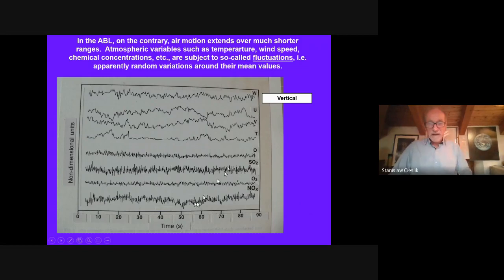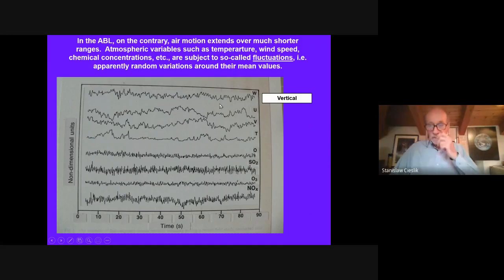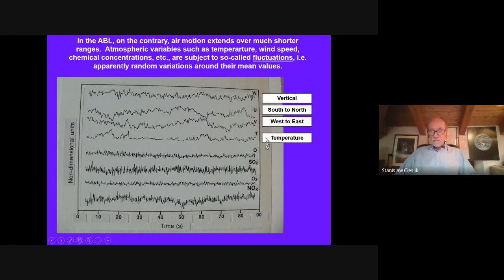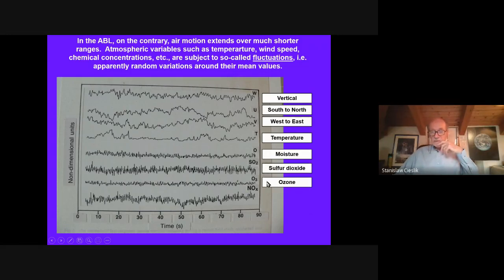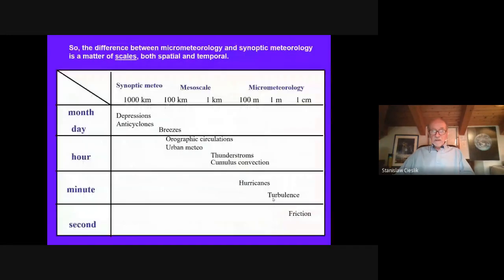So we have a lot of variables here during these 90 seconds. You have the three components of the wind vector — the vertical one, then the south-to-north U, west-to-east V — temperature, humidity, moisture, sulfur dioxide, ozone, NO2. All these variables are very fluctuating, as you can see. You see also that the difference between micrometeorology and synoptic meteorology is a matter of scales.